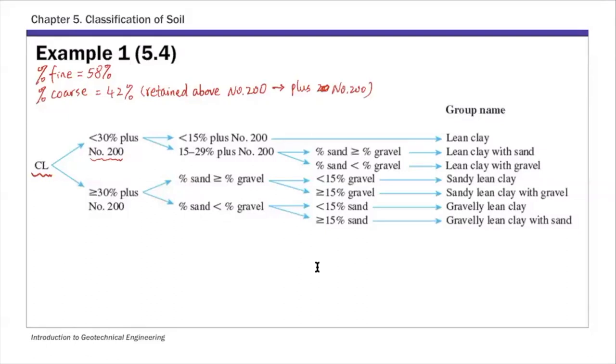So we have 42% plus number 200. So it's going to be larger than 30%. That's why we're going to pick this route. So greater than 30% plus number 200. We have 42%. Of course, it's greater than 30.